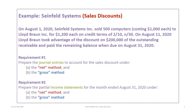This tutorial is based on the Seinfeld Systems example. There is no accompanying file — the data is short enough to include in the slides. Our requirements are to first prepare the journal entries to account for sales discounts under both the net and gross methods, and second to prepare partial income statements under both methods.